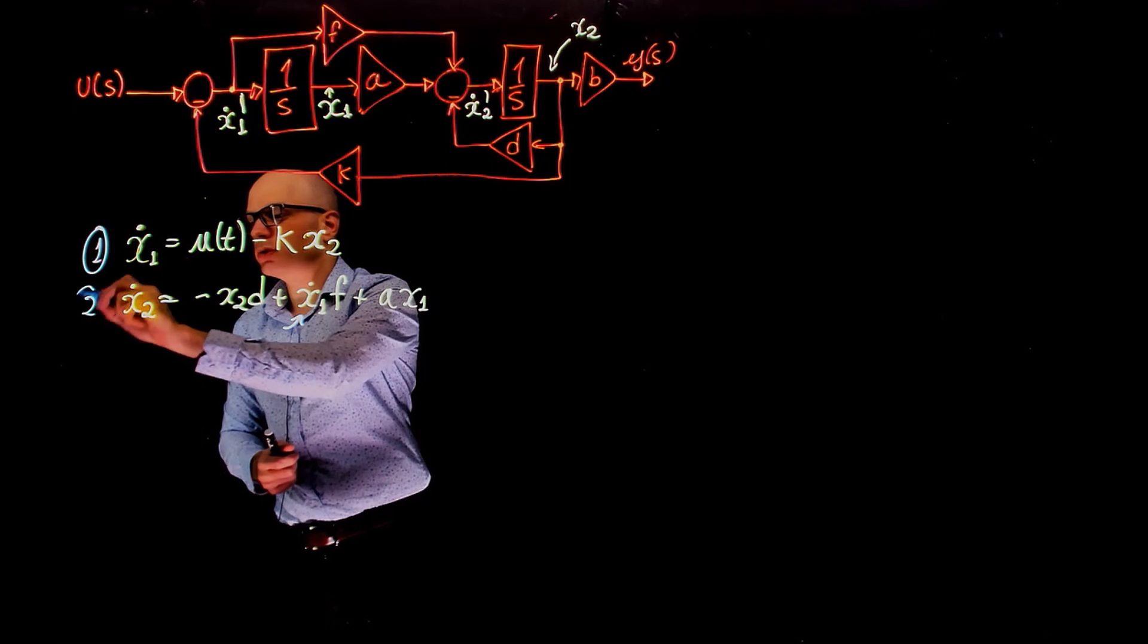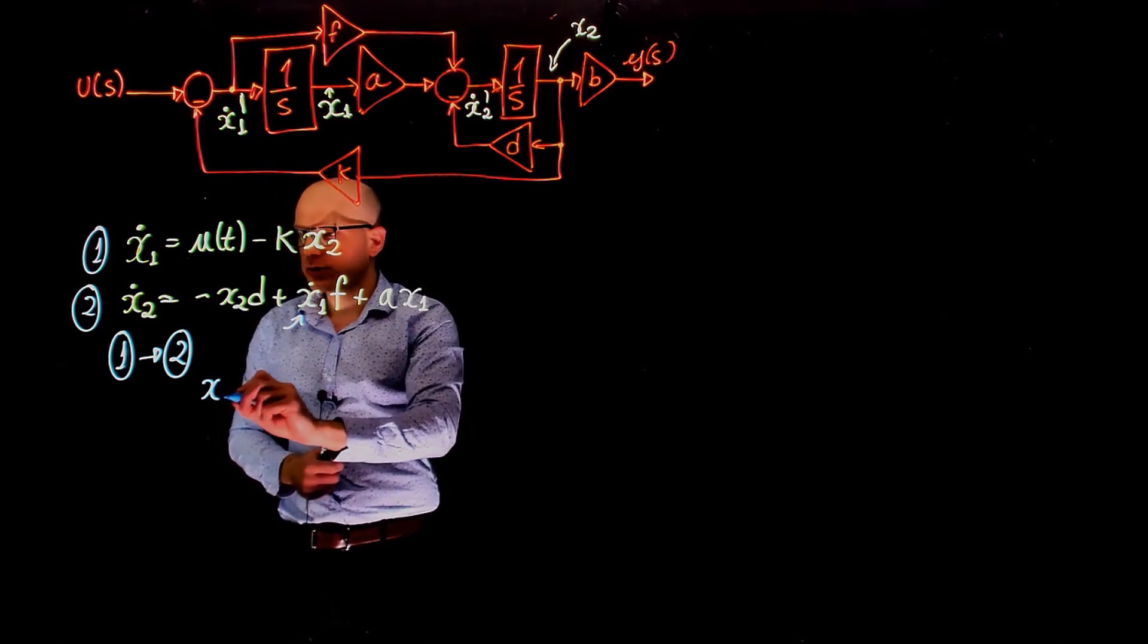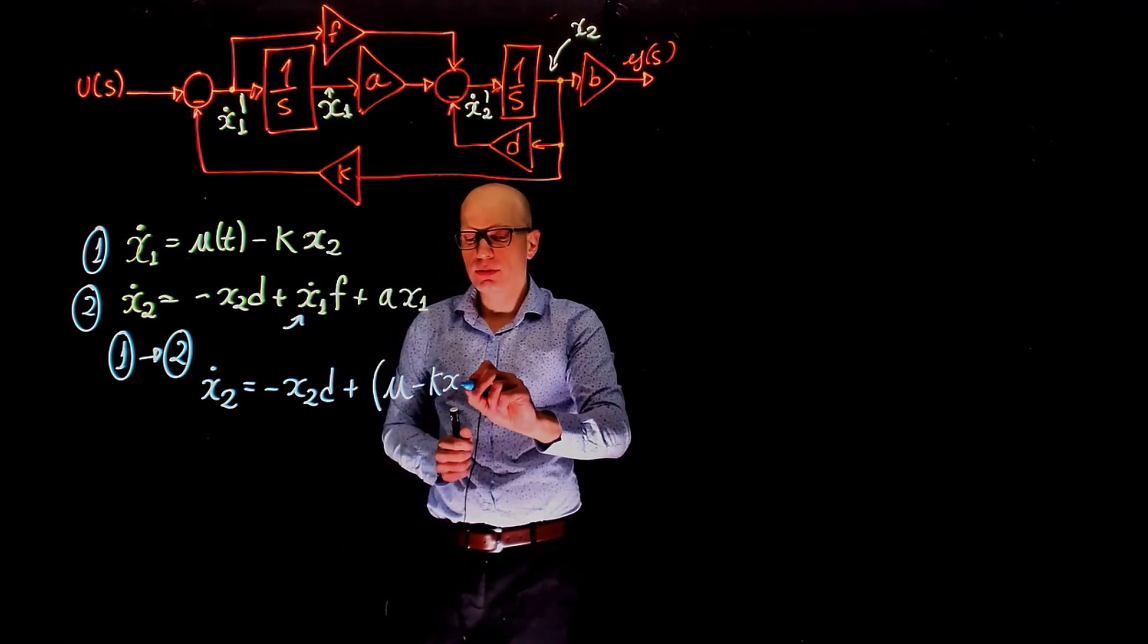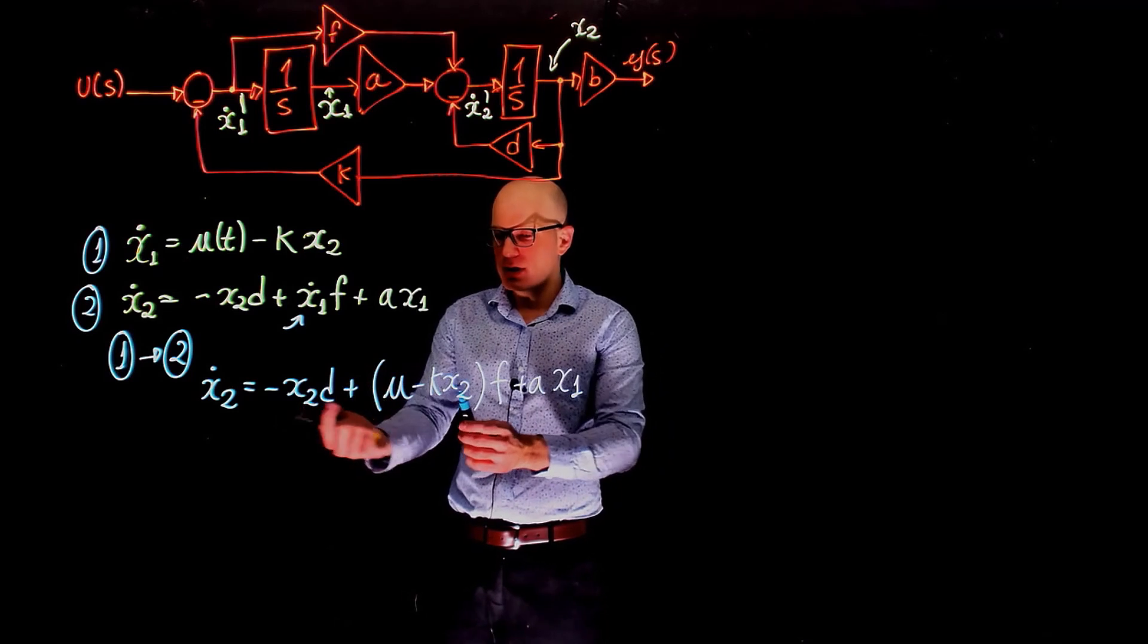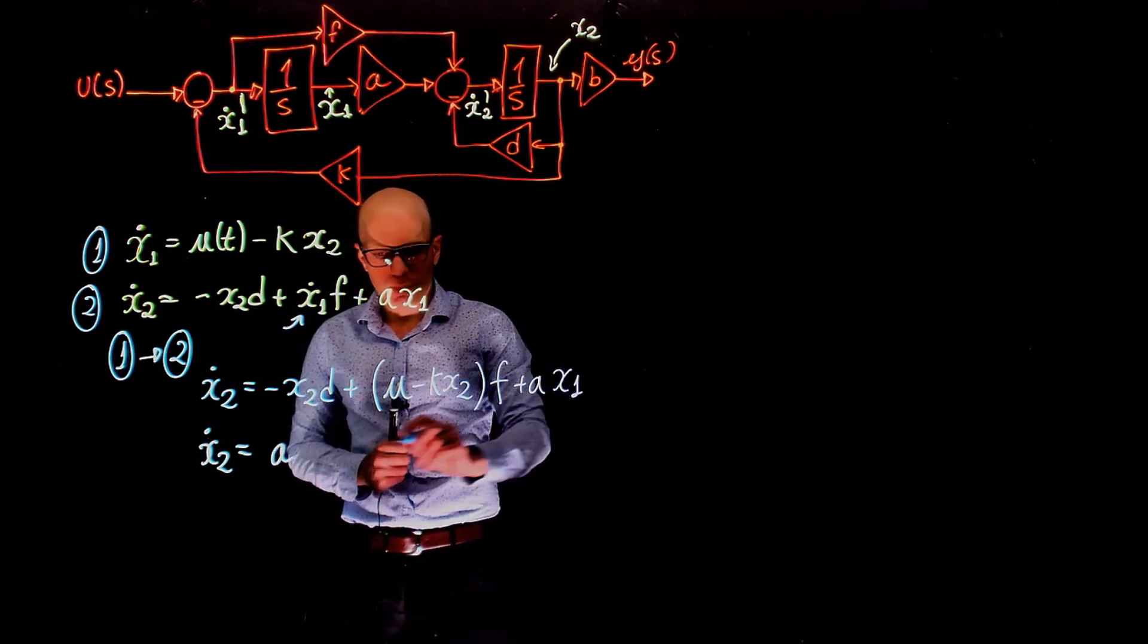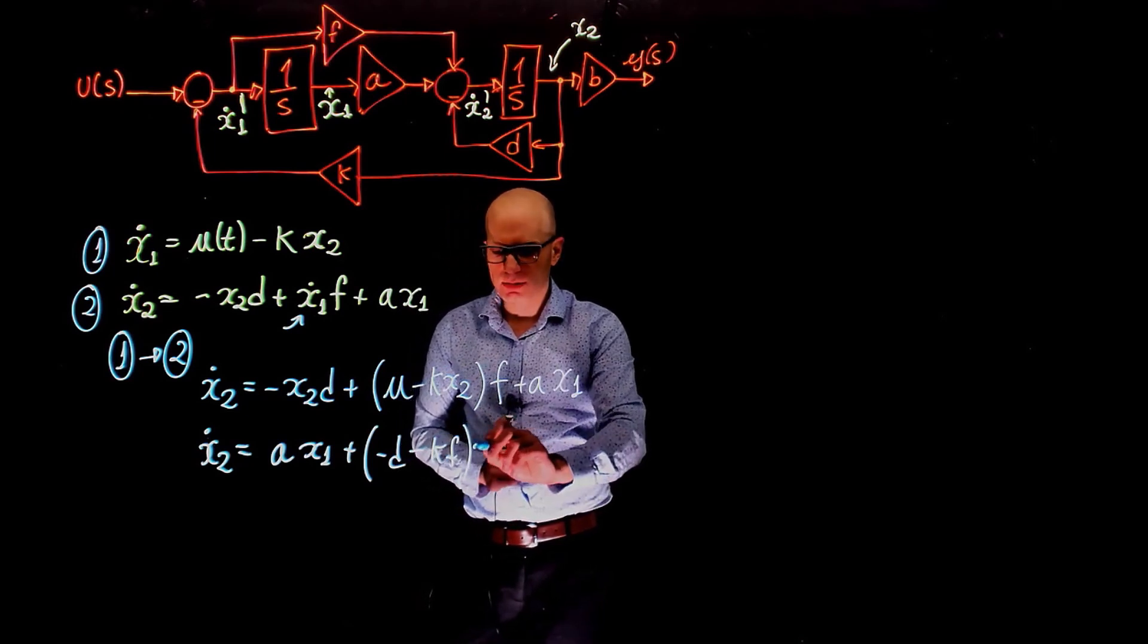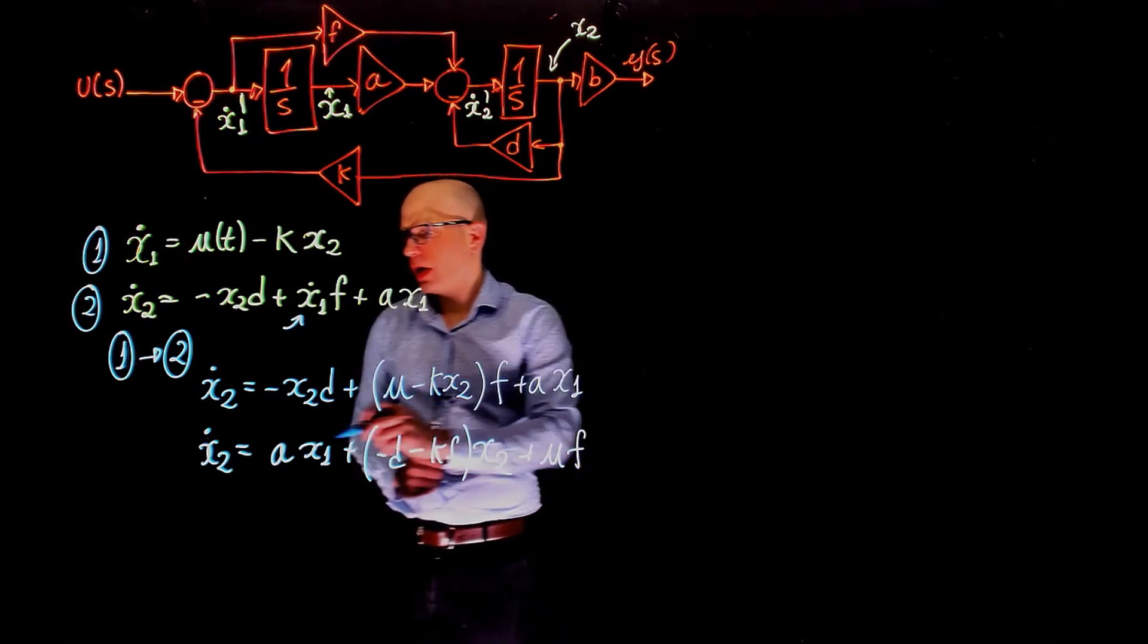Well, now we can simply replace x1 from the first equation into the second. So this is equation one, this is equation two. By putting now 1 into 2, we get x2 dot equals to negative x2 times d, plus x1 dot is this whole part here, u minus kx2, all times f, plus ax1. We can now factor out this x2, so we have x2 dot equals to ax1 plus negative d minus k times f, all times x2, and plus u times f.